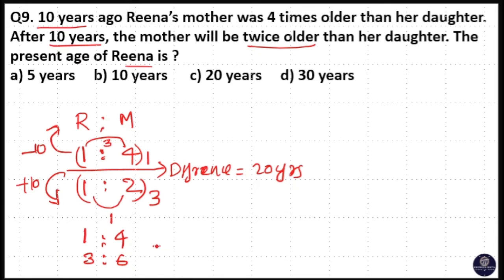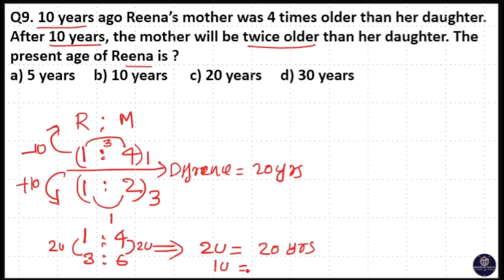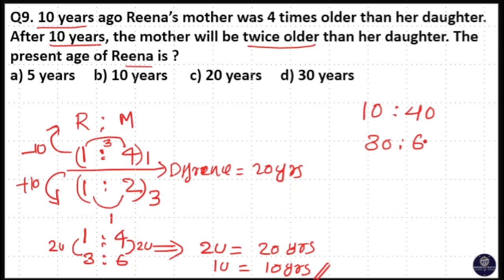Here you can see the difference between 4 and 6 is 2 units, and the difference between 1 and 3 is 2 units. That means 2 units is 20 years, then 1 unit is equal to 10 years. The new ratio is 1 is to 4 and 3 is to 6. So 1 unit is equal to 10 years and 4 units is equal to 40 years. Similarly, 3 units is equal to 30 years and 6 units is equal to 60 years.